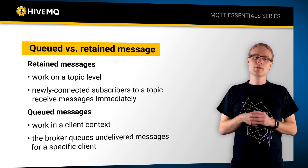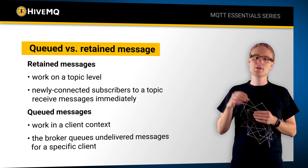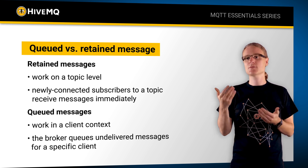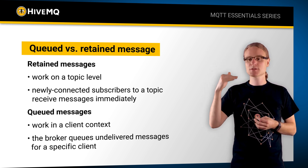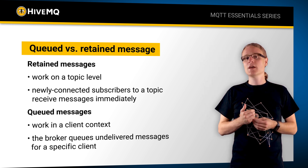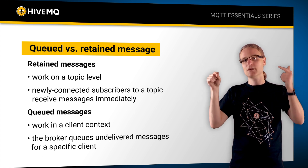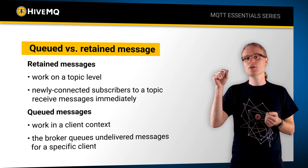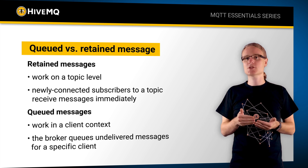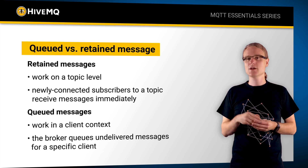Notably, the broker will only publish the retained message flag set to true to a client when the client receives the message due to the retained message mechanism — i.e., it started fresh, created a new subscription, and received the message that way. If an online client subscribes to a topic and another client publishes a retained message to it, that subscribing client gets the message as a normal MQTT message without the retained flag set to true, because this is the normal MQTT flow.